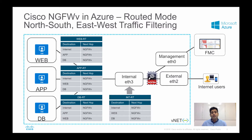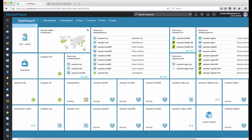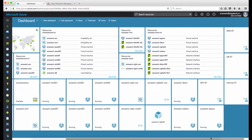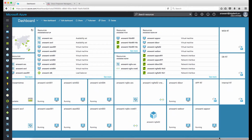I'll now jump into portal.azure.com and show you how to deploy this kind of setup. I'll show you how I have enabled NATing, how I have enabled UDRs, and how traffic is getting inspected. I'll start with the configuration on the Azure side and then log into Firepower Management Center and show you how things are deployed on the next-generation firewall.